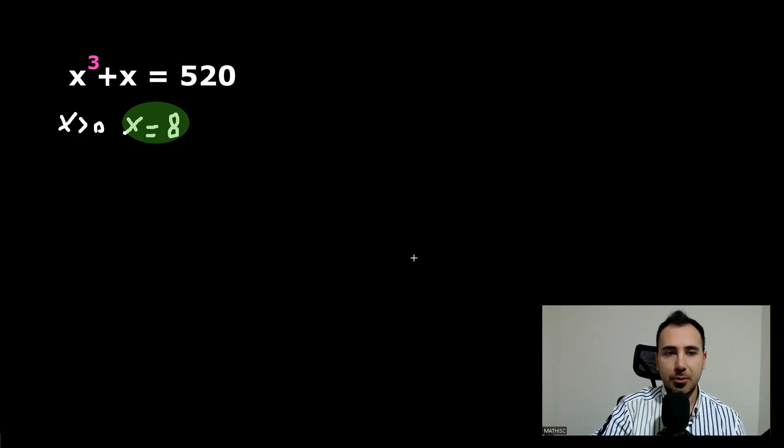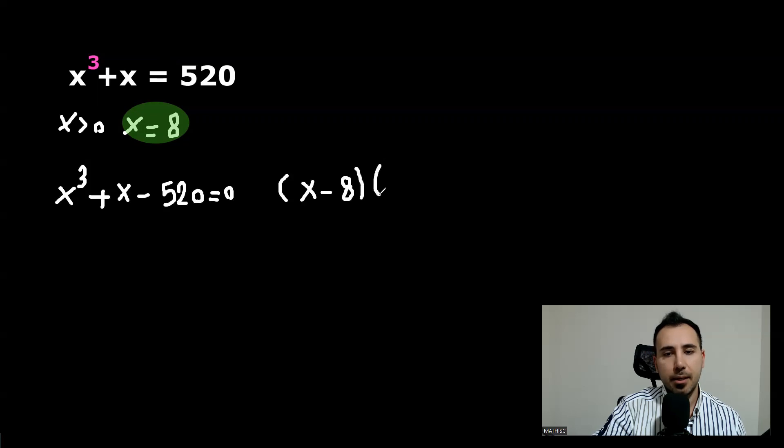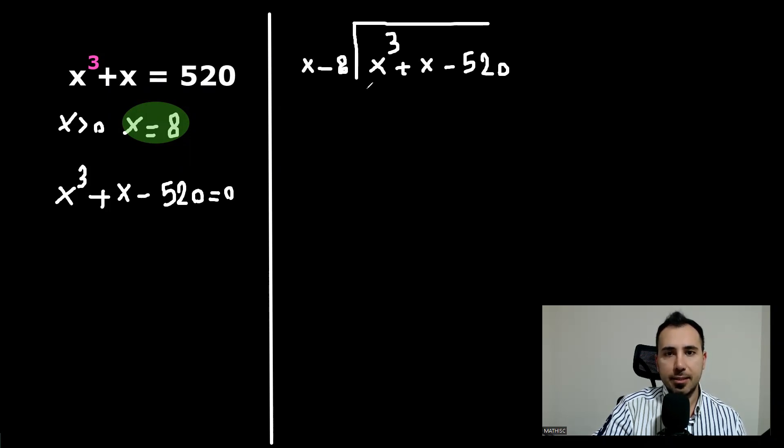So I'm going to take this 520 to the left. Now we're going to use this x equals eight to our advantage because this equation will be x minus 8 multiplied by something. To find this equation, we need to divide this by this. Now let's go and do that. I'm going to put a line here.